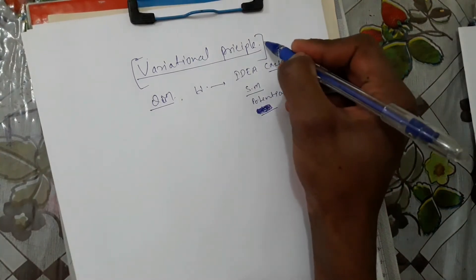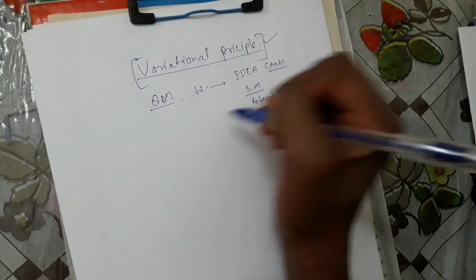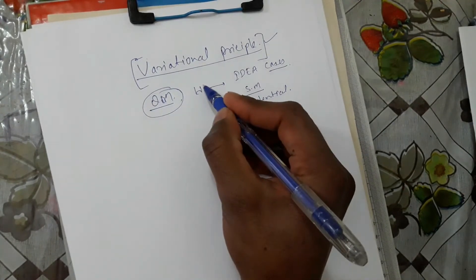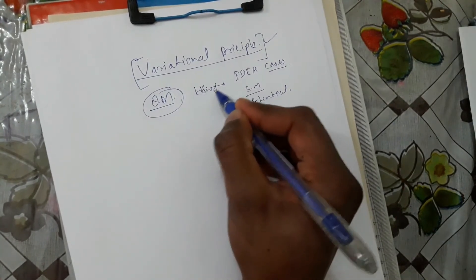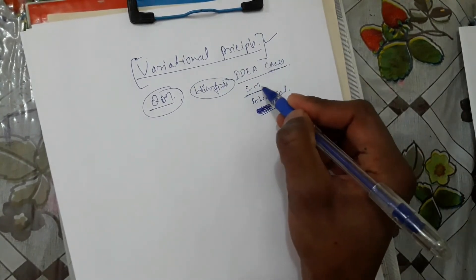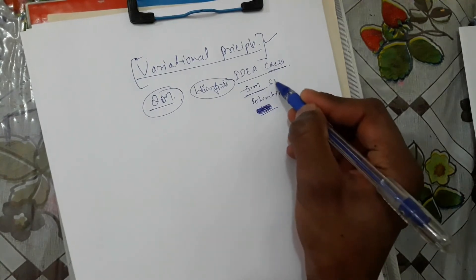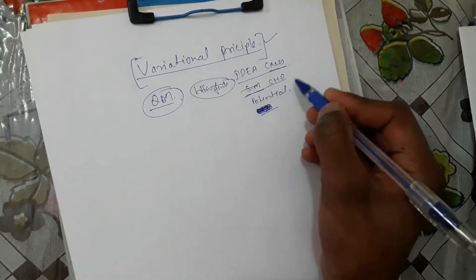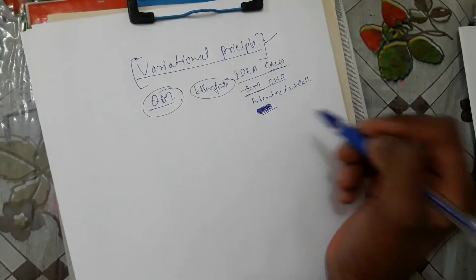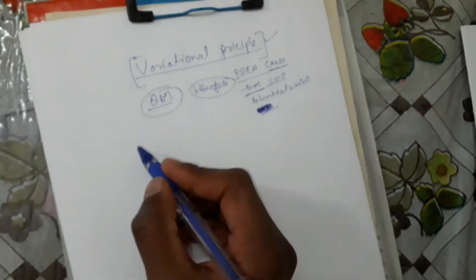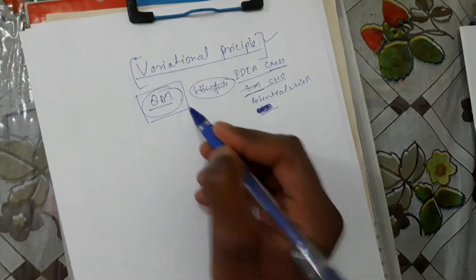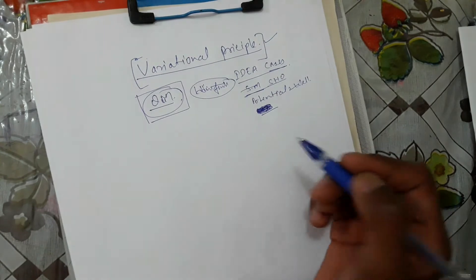I will talk about the variation principle — it is an important method of quantum mechanics. We know various wave functions and ideal cases: simple harmonic oscillator, wave potential wells, potential steps, and many things. These are the ideal cases of quantum mechanics. But in this universe everything is in a perturbation state, meaning something is changed from the ideal case.